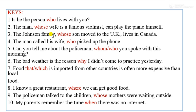Number three: 'The Johnson family, whose son moved to the UK, lives in Canada.' We use 'whose' because it means 'their son' — it shows possession. Number four: 'The man called his wife, the person who picked up the phone.' We use 'who' because it refers to a person.